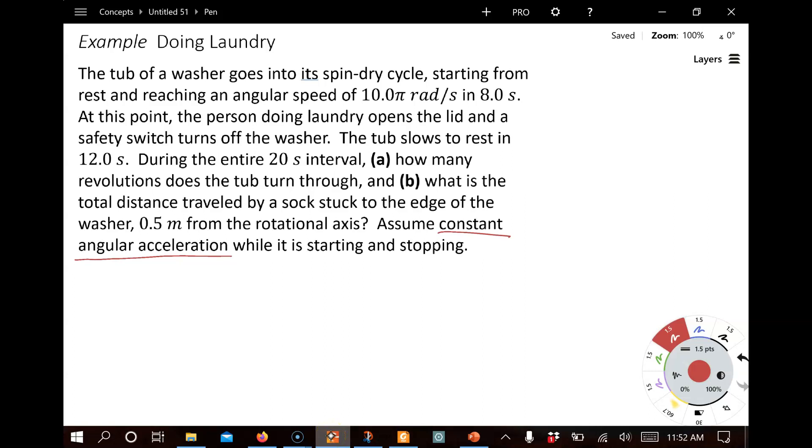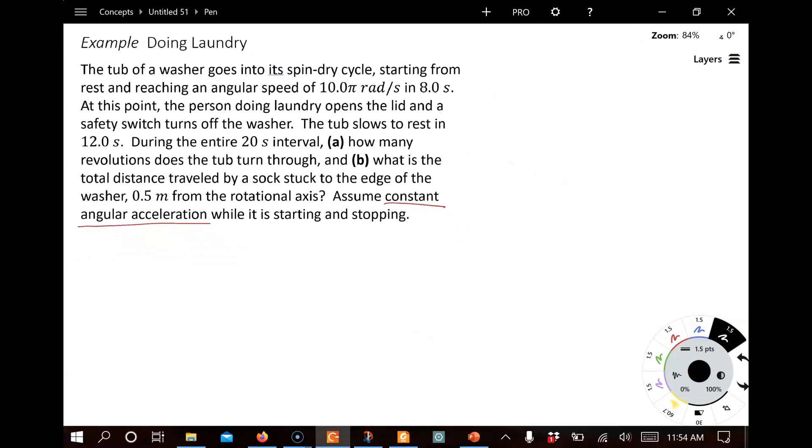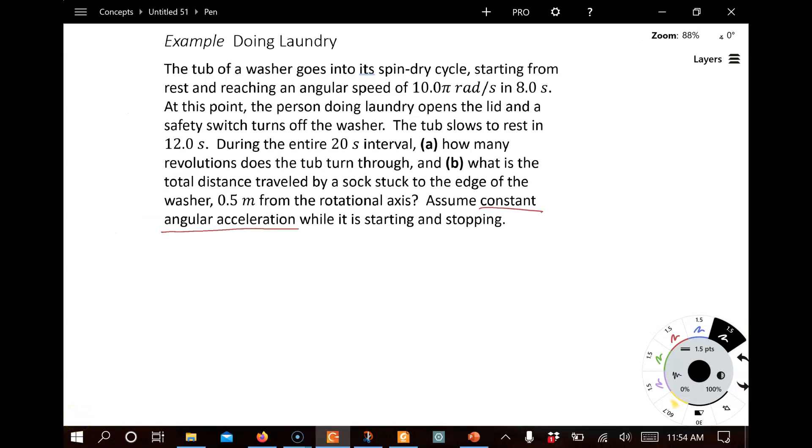So this is a two-step problem, and we're going to go ahead and use constant acceleration each time. However, it does change in the middle, so we need to do a two-part problem. Let me pause for a moment and write out our five variables for constant angular acceleration. So part one here is where we are speeding up.